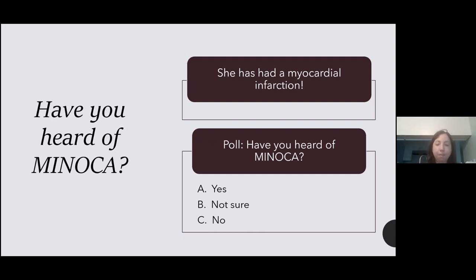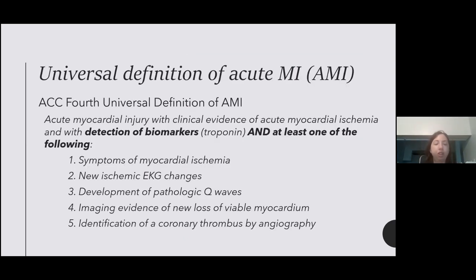Let's get to the meat of this. I'm going to start with the American College of Cardiology's fourth universal definition of acute MI. We all think we know what MI is, but this is the actual clinical definition: detection of biomarkers — a troponin of some kind — in the appropriate clinical setting, and at least one of the following: symptoms, ischemic EKG changes including pathologic Q waves, imaging evidence of new loss of viable myocardium, and identification of a coronary thrombus by angiography. An MI is not defined solely by findings on angiography. In our case, this is a patient who came in with an elevated troponin and chest pain.